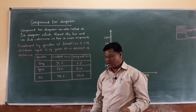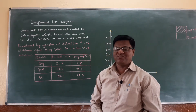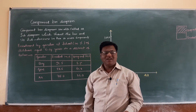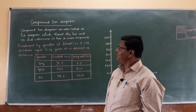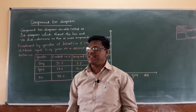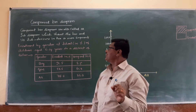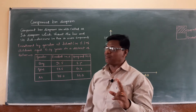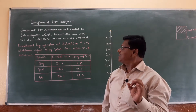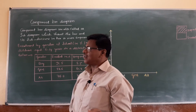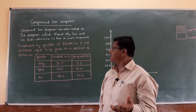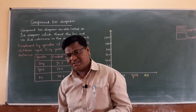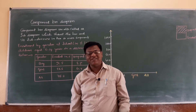First of all, you have to understand the meaning of component bar diagrams. The component bar diagram is also called as the sub-diagram, which shows the bar and its subdivision into two or more components.